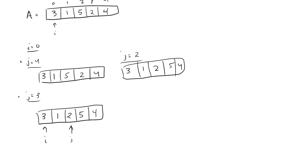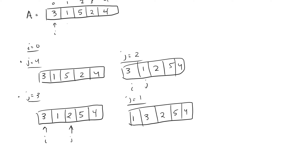Then we move J to right in front of I. We say: is A[J] less than A[J-1]? And that is true — they are out of order. When J equals one and that terminates, we are left with the array one, three, two, five, and four. We are done with J at this point because it terminates right in front of I — it doesn't go to I. Now we move the counter I.